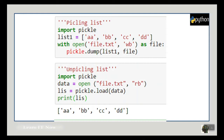To pickle a list, we write: import pickle, define the list, then open the file using 'with open(filename, mode) as file_handler'. This method means we do not need to write file.close(). Alternatively, use the traditional method: file = open('file.txt', 'wb'), then pickle.dump(list_name, file_object).